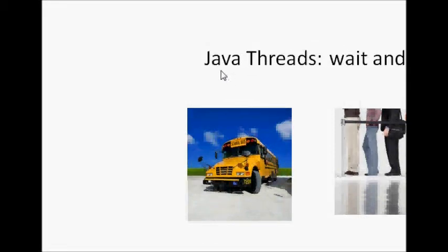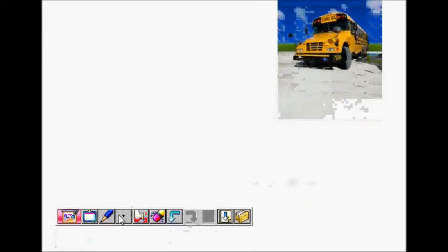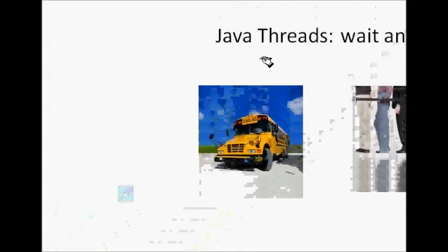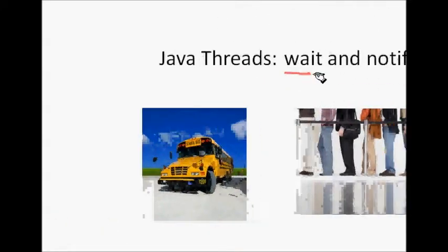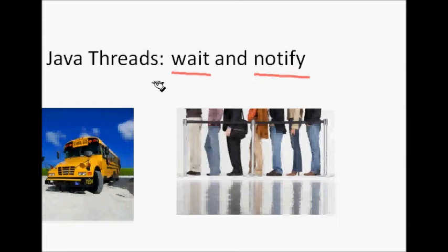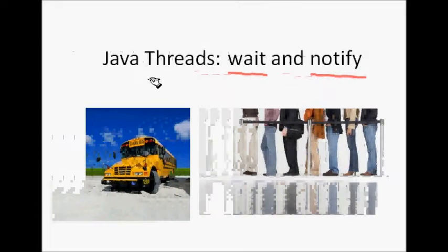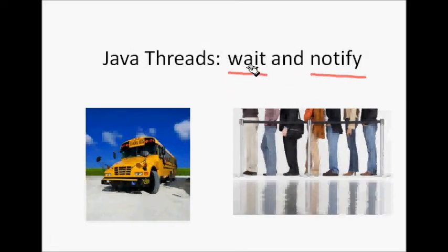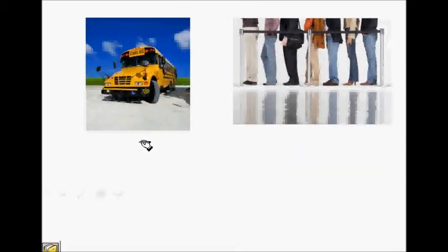In this lecture we will learn about Java threads and its methods wait and notify. These are two very important methods for synchronization among threads. The name is very suggestive - it tells that some thread has to wait, and it has to wait till another thread notifies. This is the basic idea.